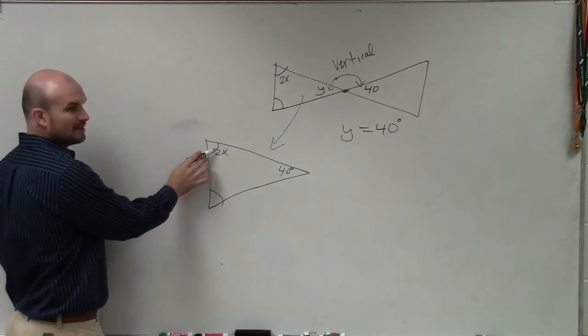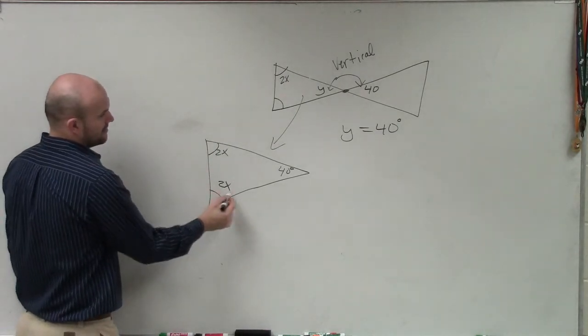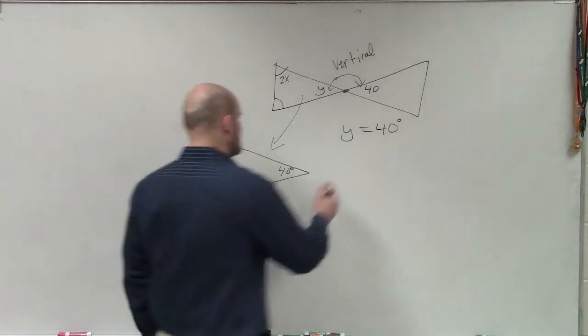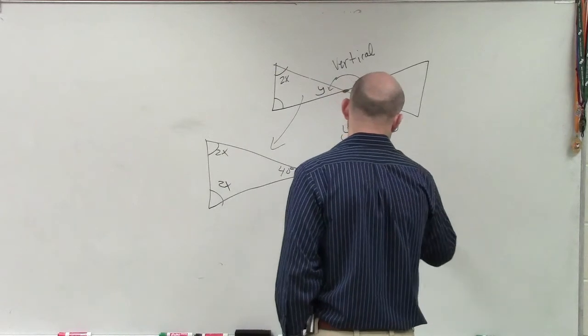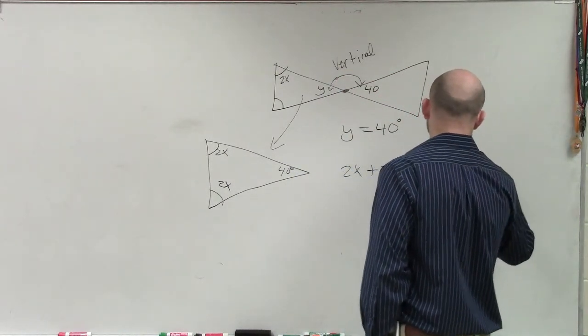If you guys notice, these two angles are equal, right? So if that's 2x, that has to be 2x. Now we know the measure of all the angles in a triangle add up to 180. So I can say 2x plus 2x plus 40 equals 180 degrees.